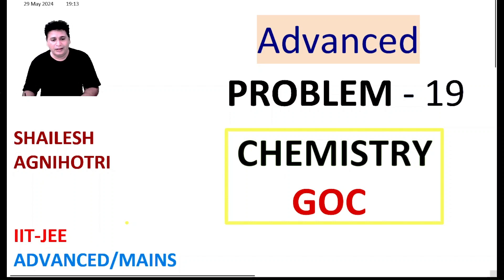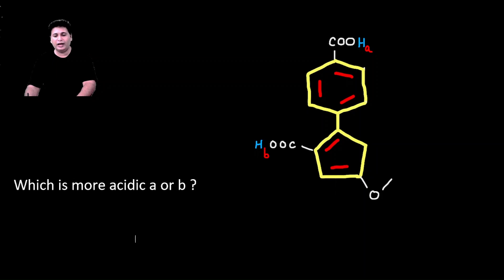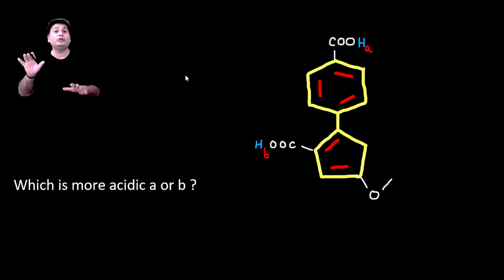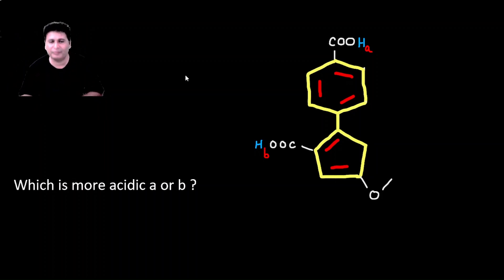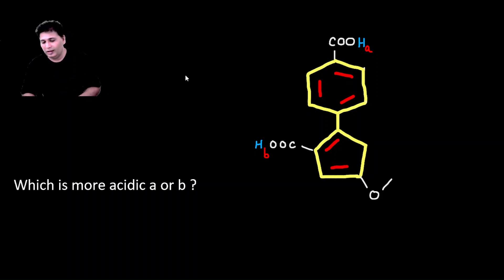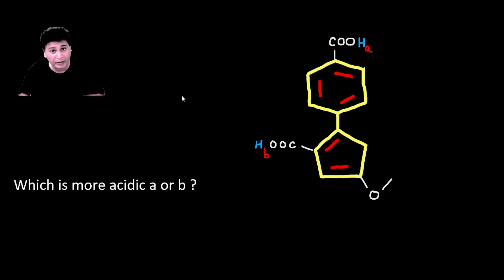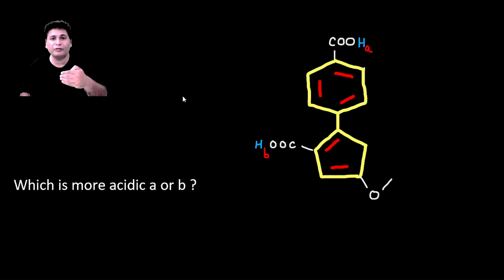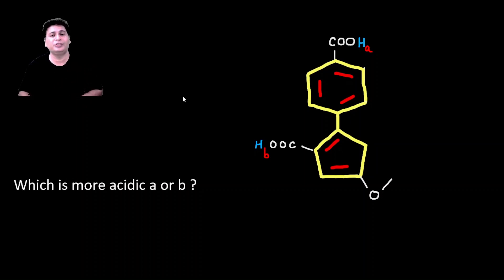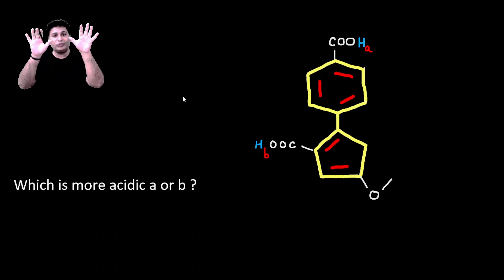As you can see on your screen, you have a compound with two carboxylic groups attached at two different points — one having hydrogen labeled 'a' and another having hydrogen labeled 'b'. You have to predict the order of acidities of a and b. We will take away the hydrogens one by one, create the conjugate base, and see the stability of that anion — higher stability means more acidic the hydrogen.